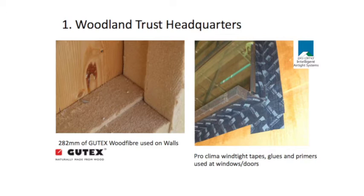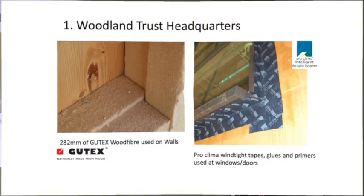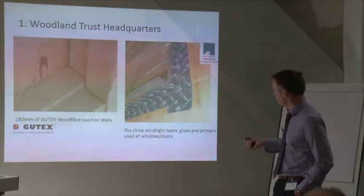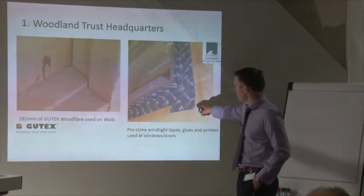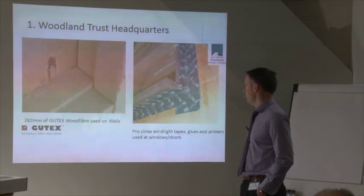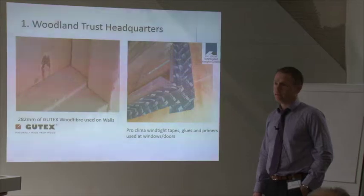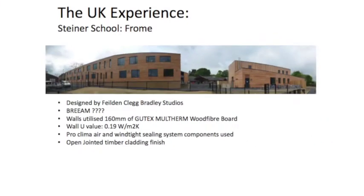The 282mm depth was achieved by combining two layers of 140mm ThermoSafe Homogen, then applying a Gutex Multiplex Top board of 22mm on the outside. They sealed around windows and doors with ProClima seal straight to the exterior Gutex board to give water and wind tightness.